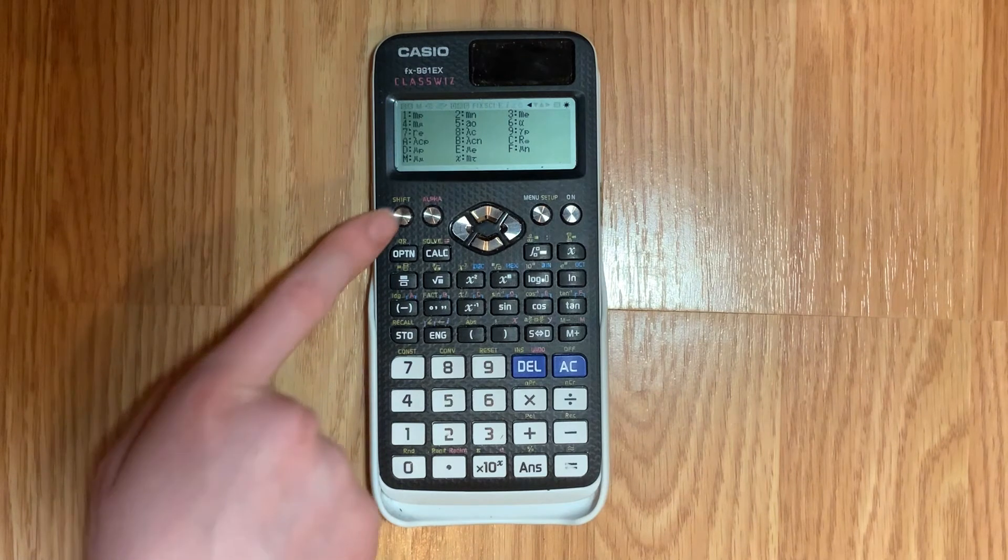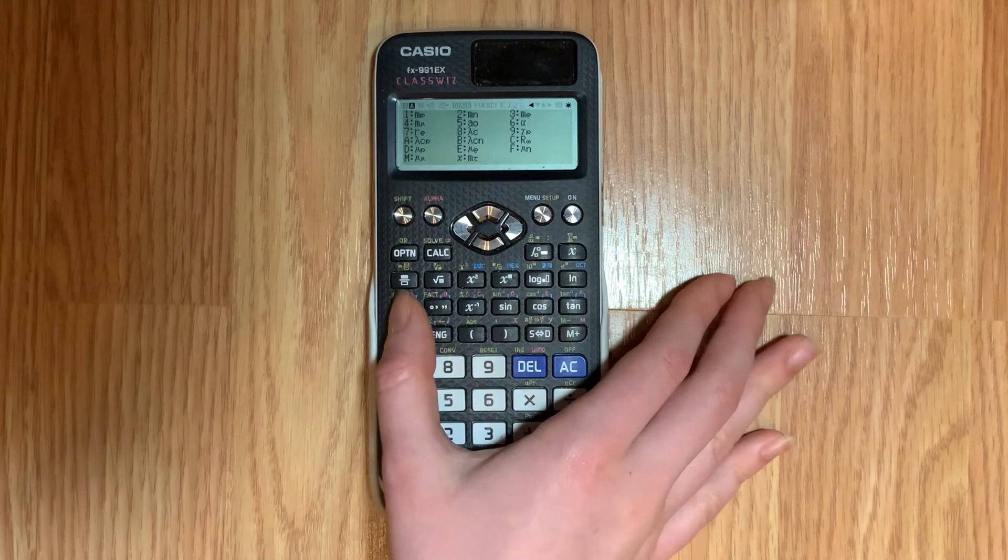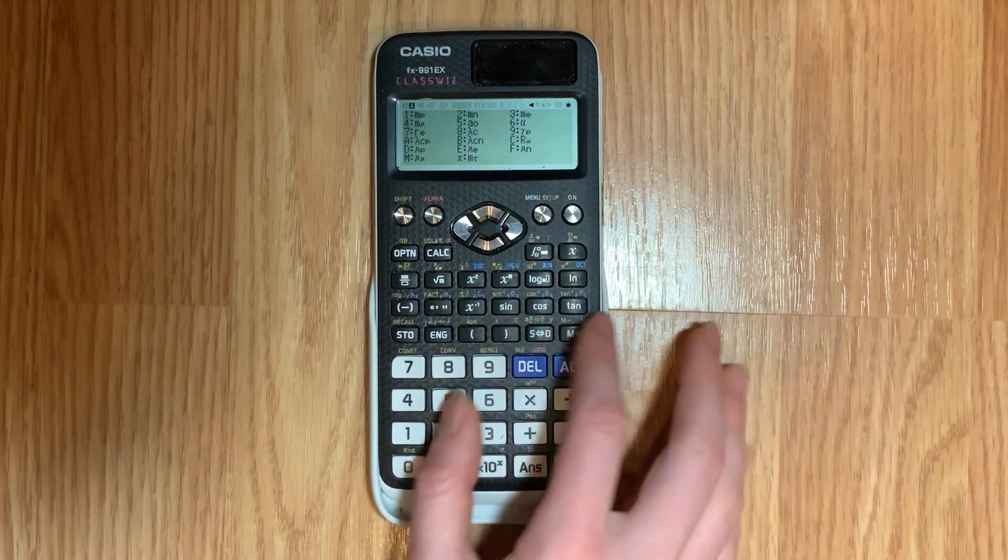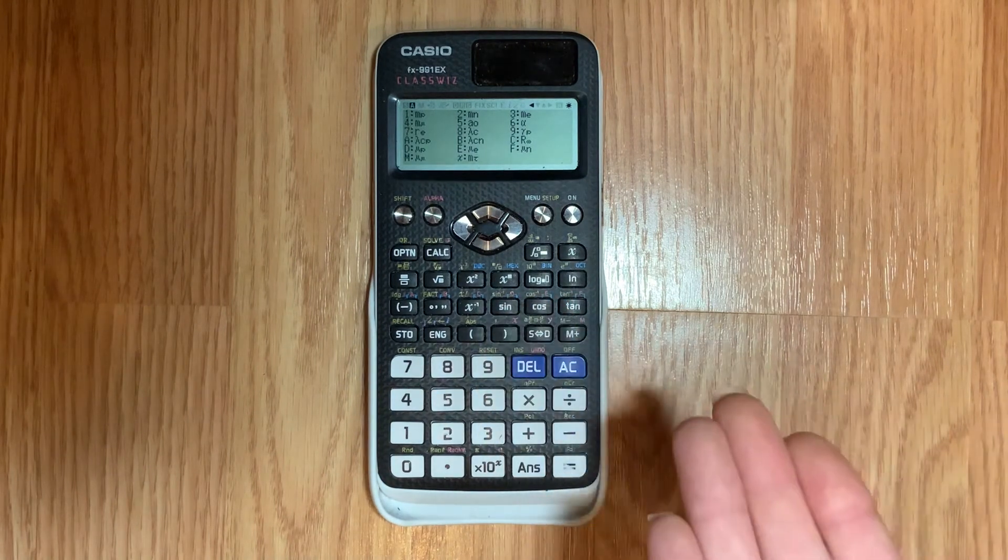To get the letter you'll push alpha which is right next to shift and then you'll look at these buttons like on the keypad and you'll see a pink letter at the top and that'll tell you which one to pick.